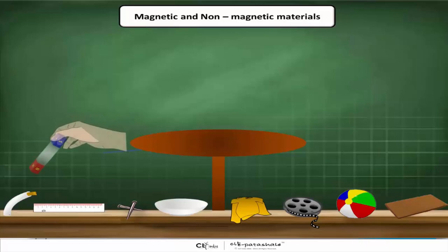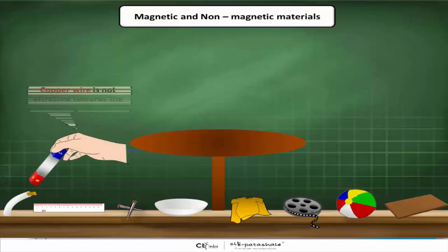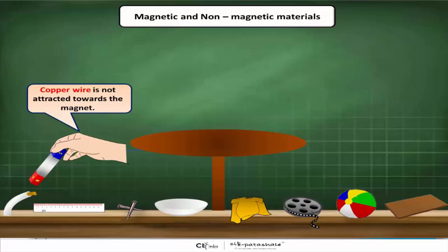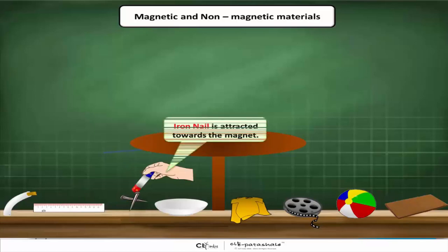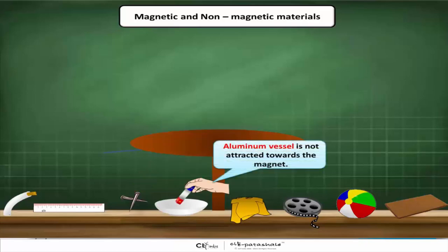Here we can see that copper wire is not attracted by the magnet. The plastic scale is not attracted by the magnet. Iron nail is attracted by the magnet. Even the aluminium vessel is not attracted by the magnet.